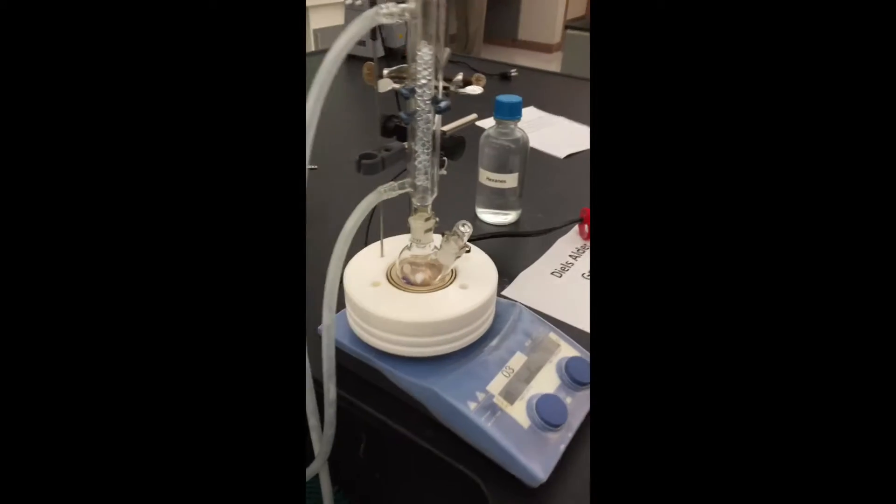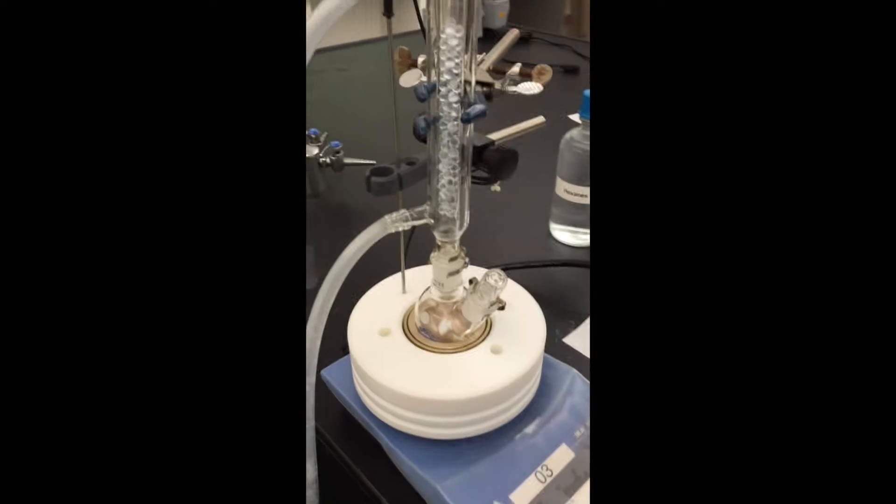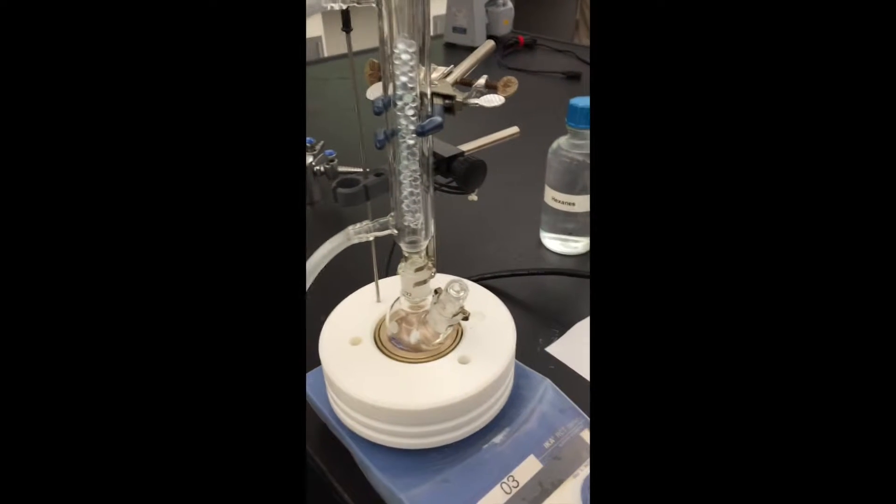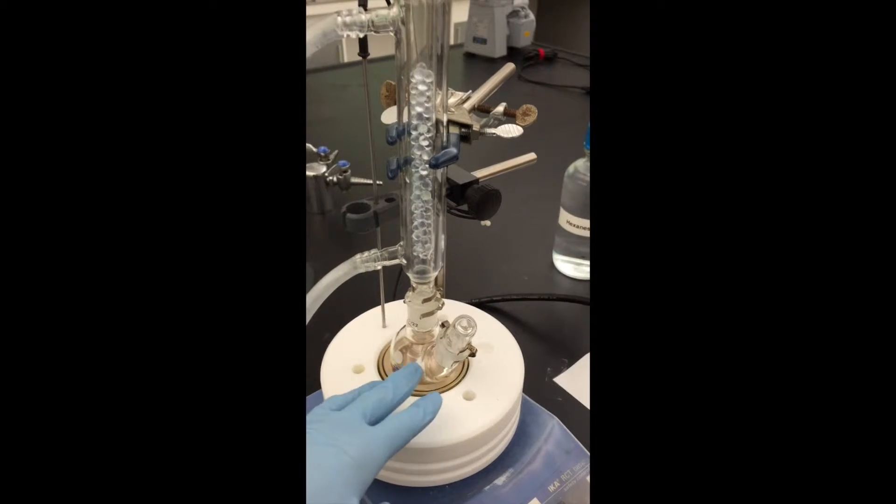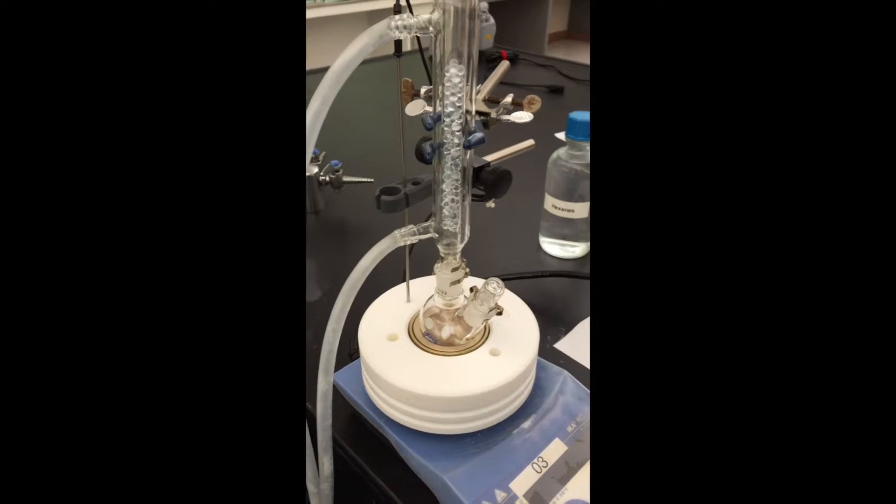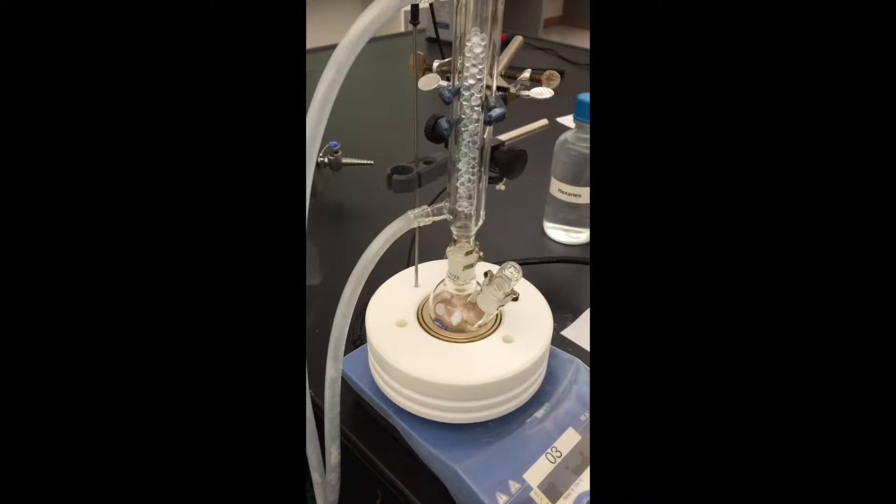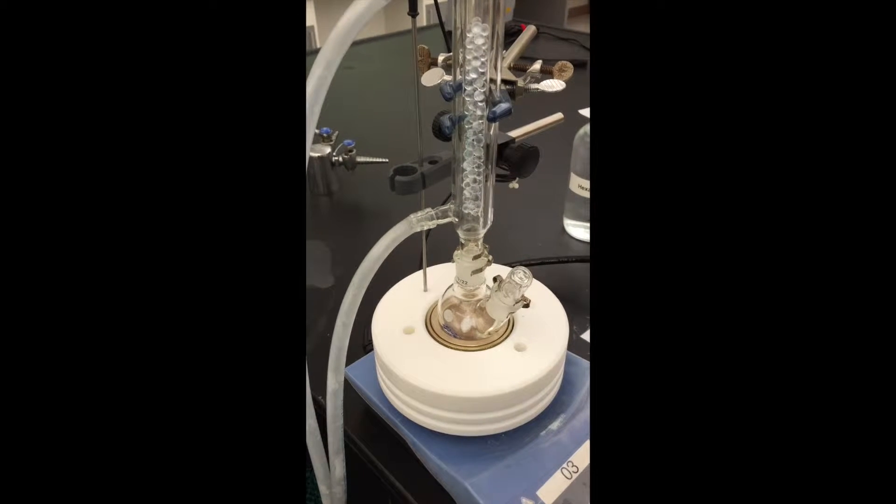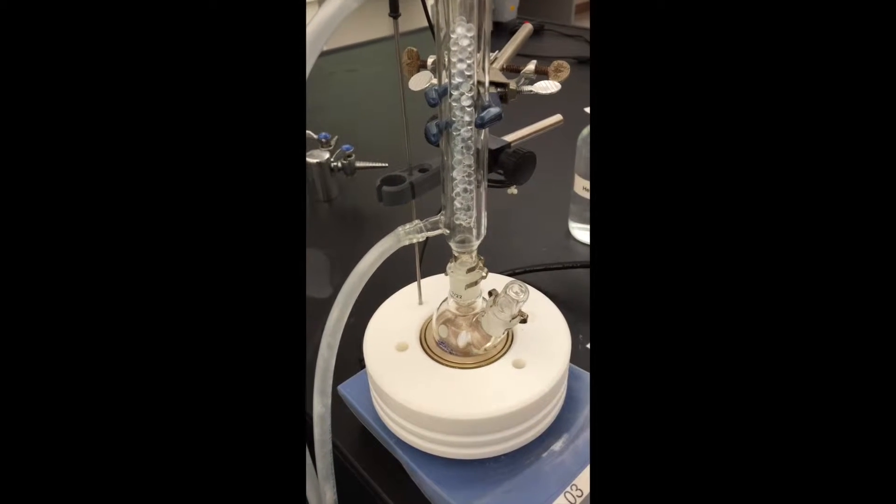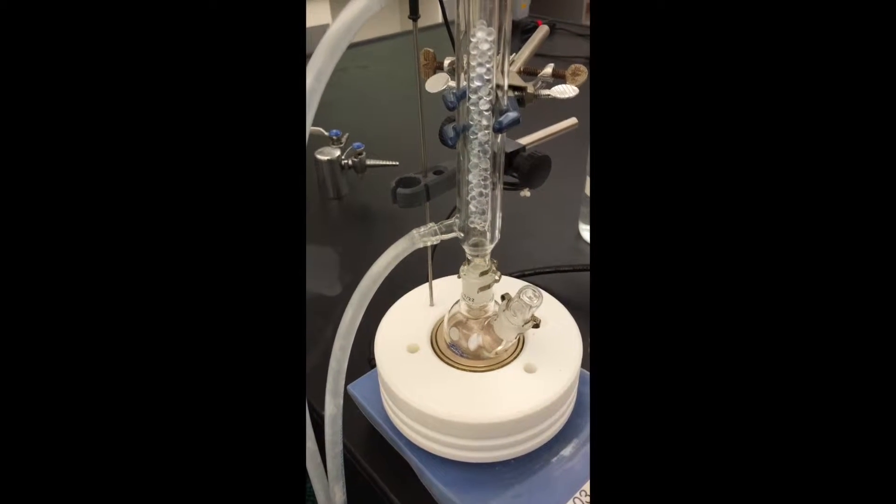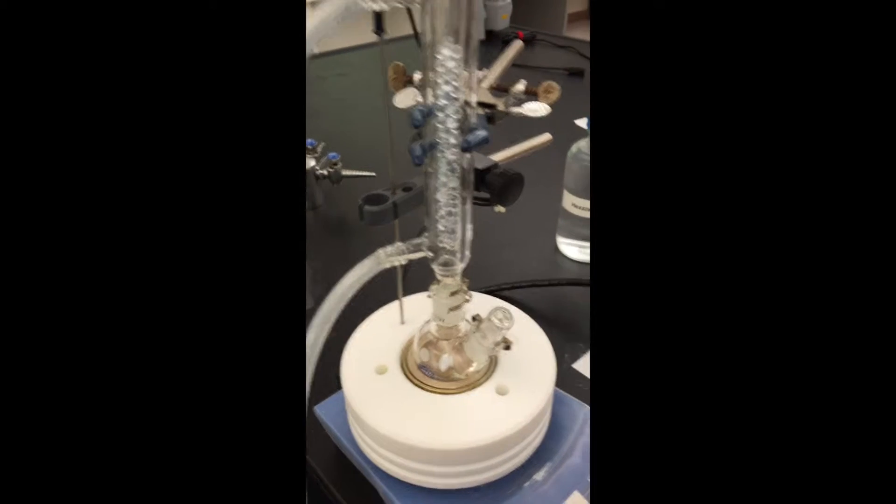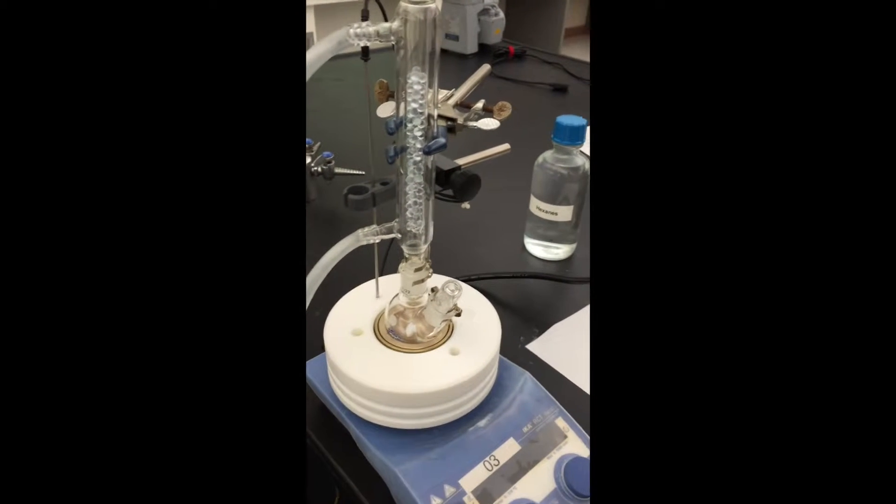And we are going to hook it up to a cool reflux condenser. Combine everything down here on the bottom. And we are going to mix and reflux for one hour. The reaction block set at 250 degrees Celsius to dissolve the solid as the reaction progresses. So here we go.